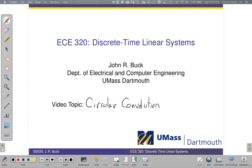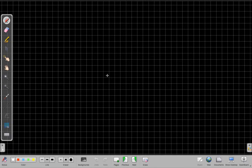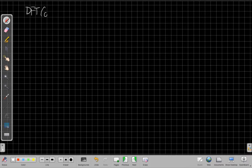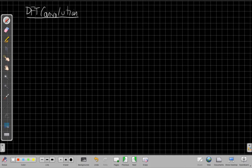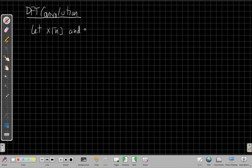Our topic for today is circular convolution, which is the kind of convolution we get when we multiply two DFTs. If we want to think about the DFT and convolution, let's assume we have X[n] and H[n] as finite length signals.